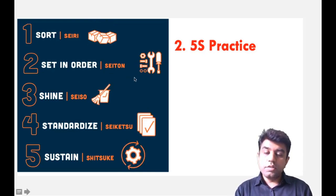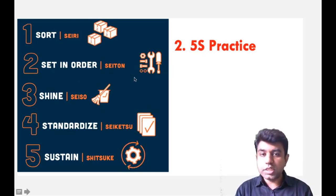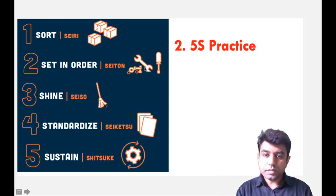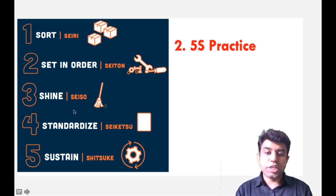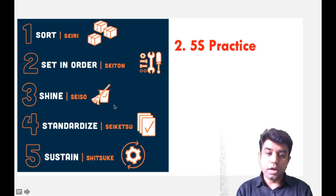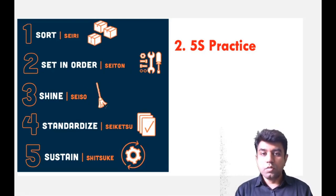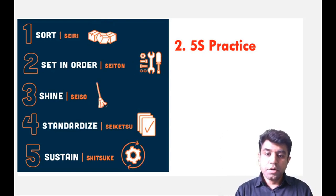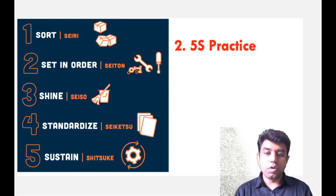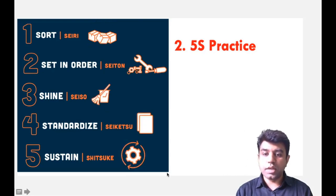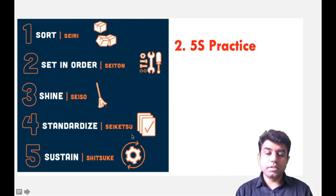The second S is Set in Order — give a specific location to each and every object in your workplace; that is Seiton. Seiso means Shine — keep things up to date and in proper location, so that whenever you need a particular item, it is always in a ready-to-use condition. Then Standardize — that is Seiketsu — give proper nomenclature, similar to why ISO was developed, just to have standardization.